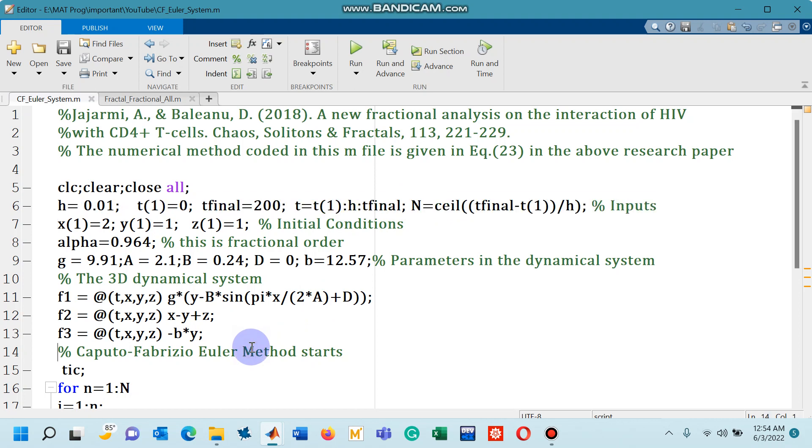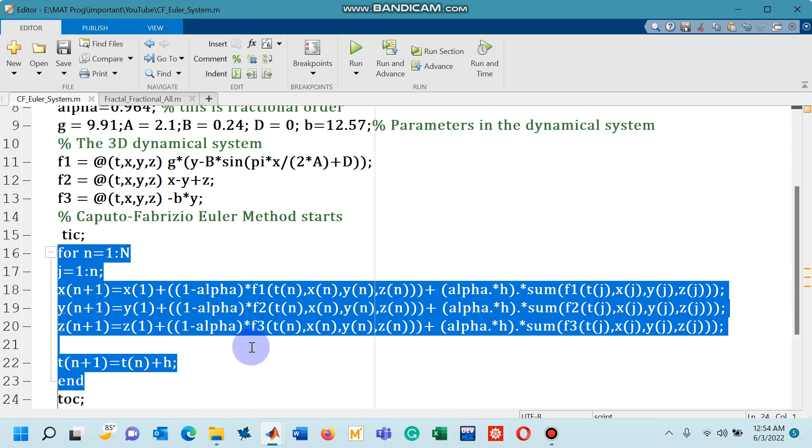So now the method given in equation number 23 of the above research paper is coded in this small and simple for loop. So you can see in this for loop there are three equations for the three dependent variables. If you have five equations just you need to repeat two of these equations with a slight change in notations.